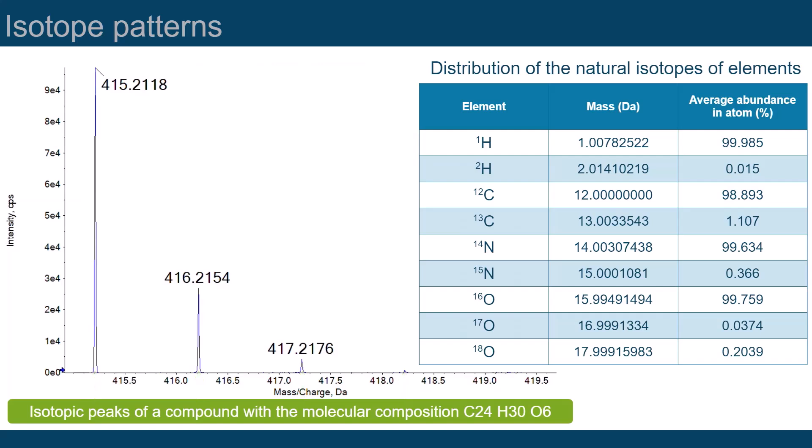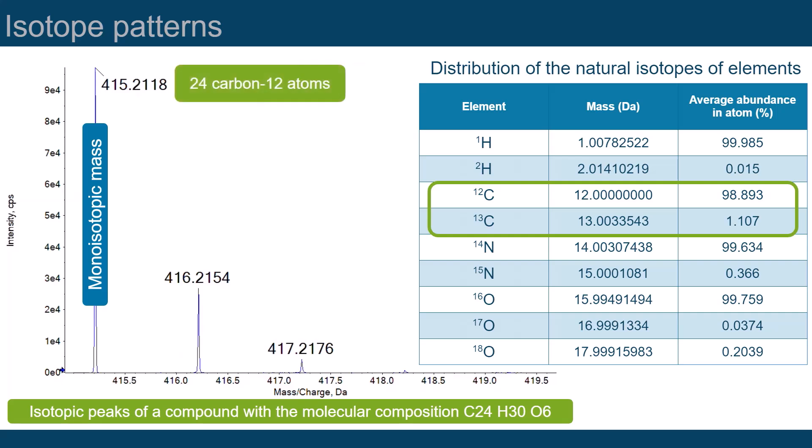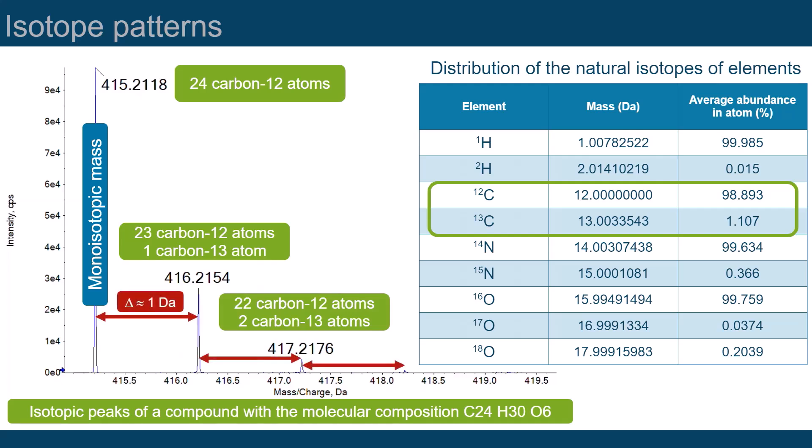The isotope pattern of a compound is mainly characterized by its carbon atoms. 98.89% of carbon atoms have a mass of exactly 12 Daltons, but in nature, 1.11% of carbon atoms have an extra neutron, making their total mass 13 Daltons. In this example, the monoisotopic mass is represented by those molecules that only contain carbon-12 atoms. The second isotope peak of this analyte is formed by the molecules that contain one carbon-13 atom. The next signal is formed by those having two carbon-13 atoms, and so on. This makes a mass difference of approximately one Dalton between the isotopes of a compound.